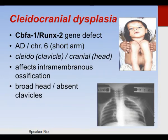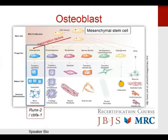BMP, or bone morphogenic protein, is another important transcription factor. It's an osteoinductive growth factor which stimulates bone formation and stimulates mesenchymal stem cells to become osteoprogenitor cells. Several recombinant BMPs have been utilized, including BMP-2 and BMP-7. BMP-2 is FDA-approved for acute open tibial fractures, although it's used in a variety of orthopedic procedures.